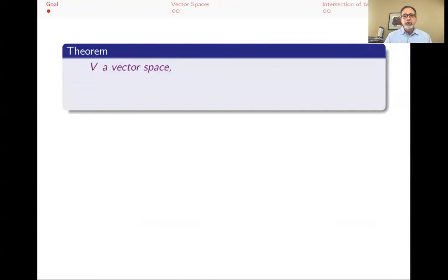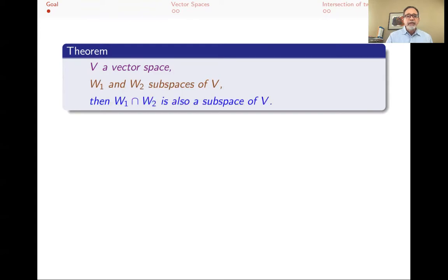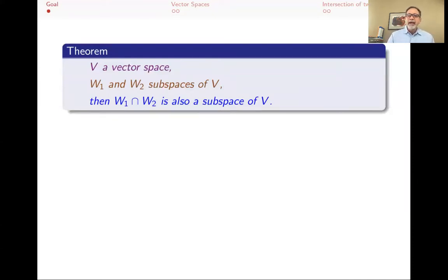What we're going to show in this lecture is that if V is a vector space and W1 and W2 are two subspaces of V, then their intersection is also a subspace of V. This is not a very complicated theorem to prove, but it's an example of a proof that we can do in general vector spaces.